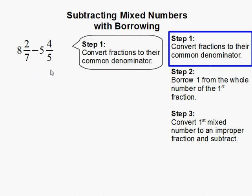We cannot subtract because our fractions, 2 sevenths and 4 fifths, have uncommon denominators. So we must convert them to have common denominators.